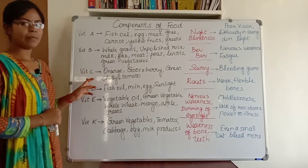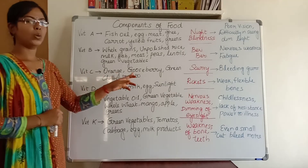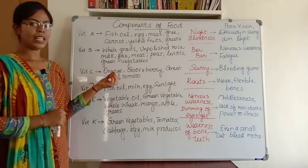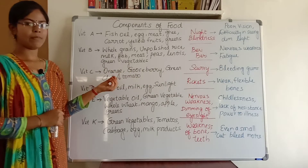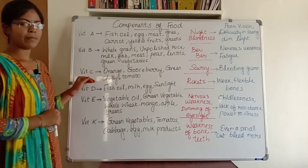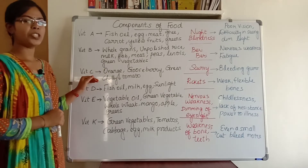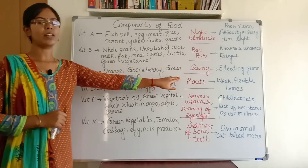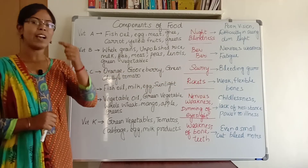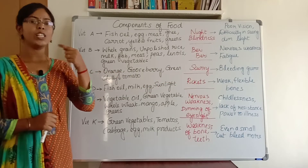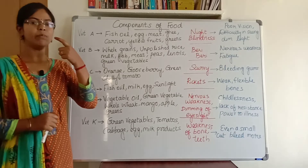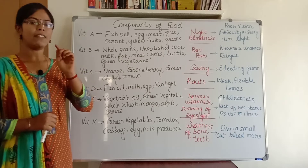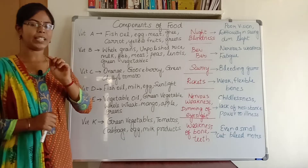Vitamin C can be seen in foods like orange, gooseberry, green chili, and tomatoes. If we don't eat these foods properly, we will be deficient in vitamin C and get a deficiency disease called scurvy. The symptoms of scurvy are bleeding gums — where our teeth arise — during brushing our gums will bleed, and when we eat a hard substance our gums will bleed.